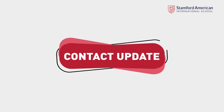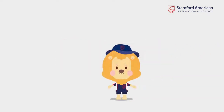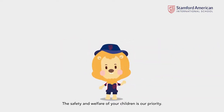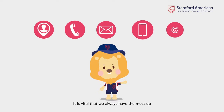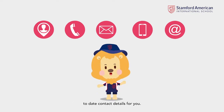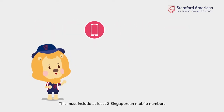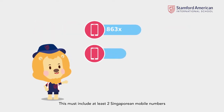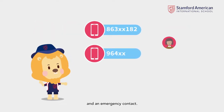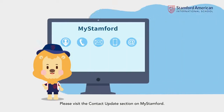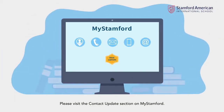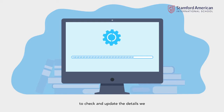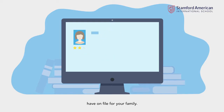Contact Update. The safety and welfare of your children is our priority. It is vital that we always have the most up-to-date contact details for you. This must include at least two Singaporean mobile numbers and an emergency contact. Please visit the Contact Update section on MyStamford to check and update the details we have on file for your family.